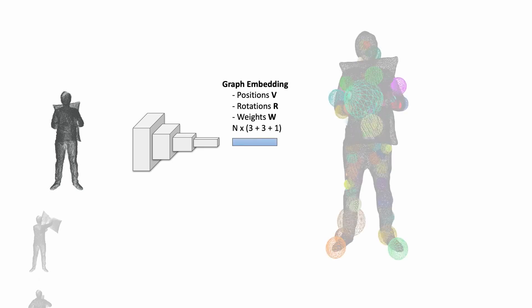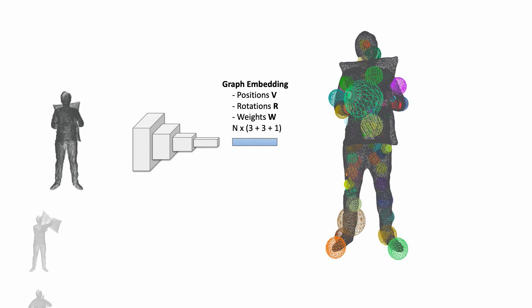A key contribution of our approach is the implicit representation of the deformation graph based on a deep neural network. For each frame in the sequence, this representation stores the graph embedding in terms of graph nodes. It gives access to the graph node position, rotation, and importance weights.